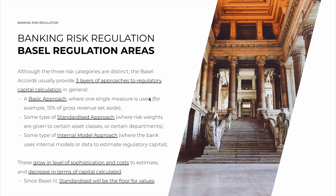For example, for operational risk, the basic indicator approach says that 15% of all gross revenue is set aside. If you have $10 billion in gross revenue, you have $1.5 billion set aside just for operational risk. Very simple, but very conservative.